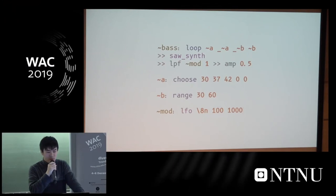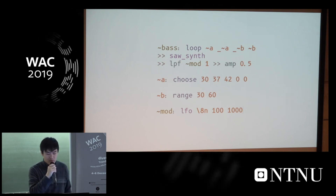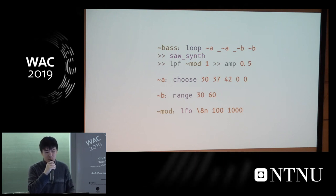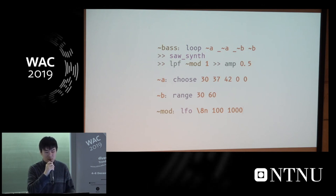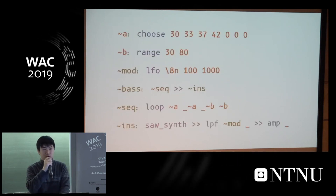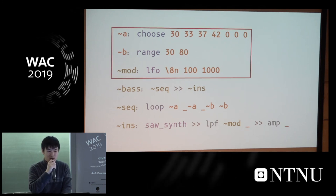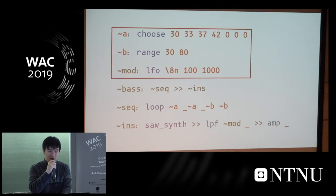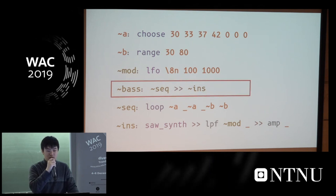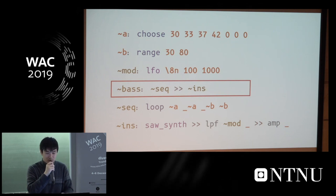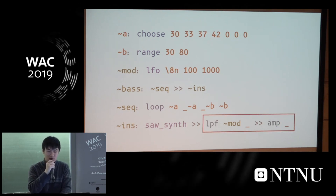You can also use the concept of reference to choose notes. Node A will choose from several MIDI numbers, and two zeros here change the probability. For node B, you can select random notes within a certain range. The order doesn't matter because evaluation here is lazy — you can write the reference before or after where you use it. You can even write functions in different parts and later connect them together to create new functions, and use underscores as placeholders to use the default value.